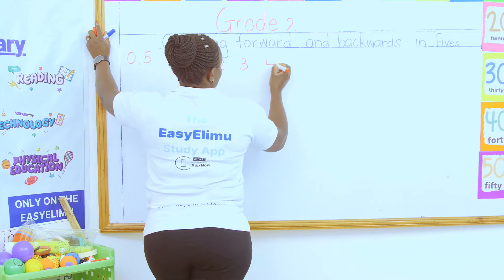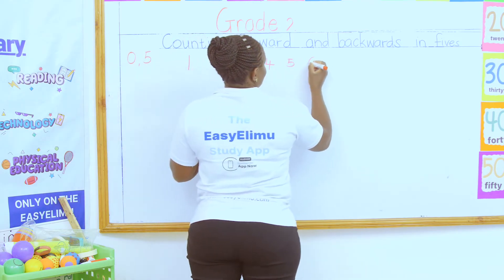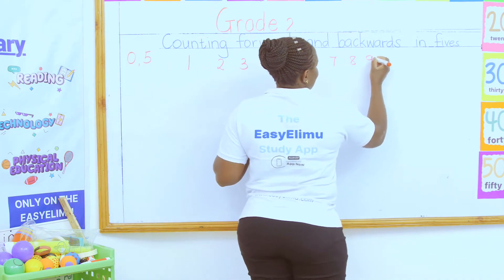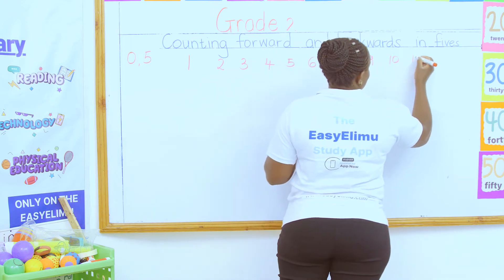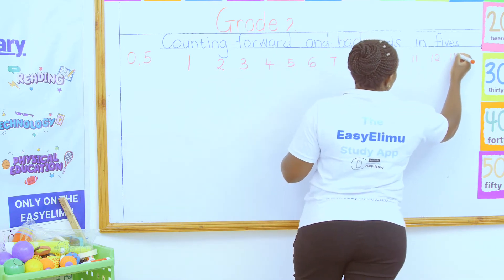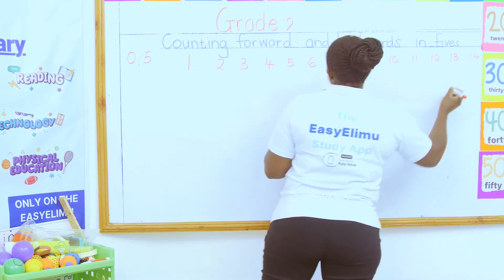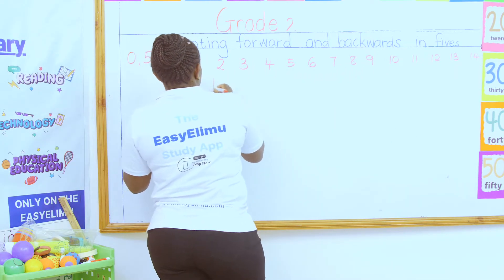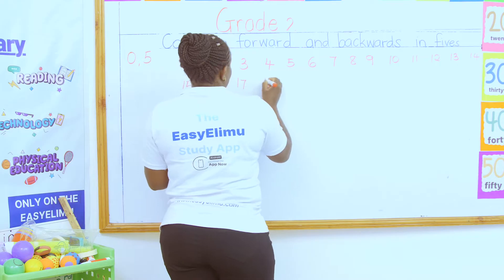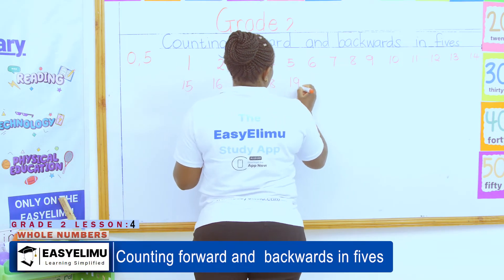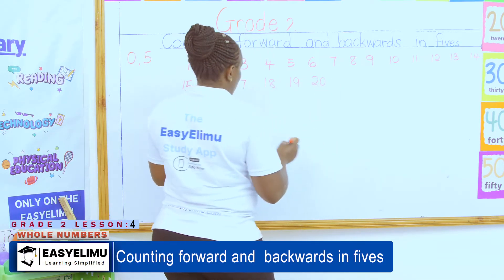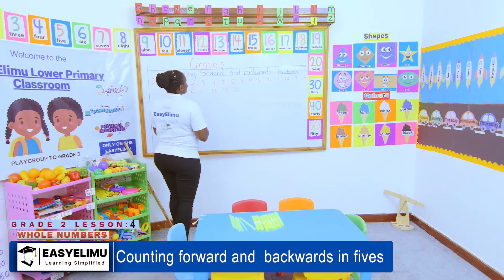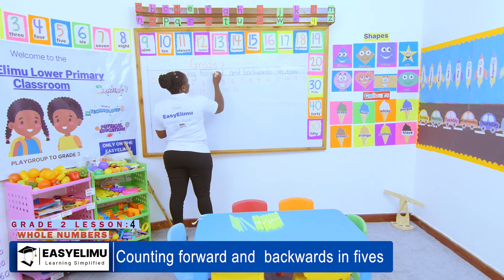If I'm counting from numbers one to ten, I say one, two, three, four, five, six, seven, eight, nine, ten, eleven, twelve, thirteen, fourteen, fifteen, sixteen, seventeen, eighteen, nineteen, twenty. So I'm supposed to count in fives.